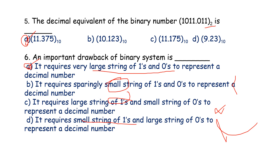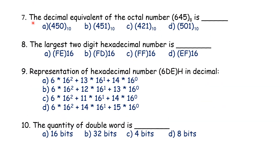The decimal equivalent of the octal number 6485: octal has base 8. To convert octal to decimal: 6 into 8 power 2, plus 4 into 8 power 1, plus 5 into 8 power 0. So option C is the correct answer.